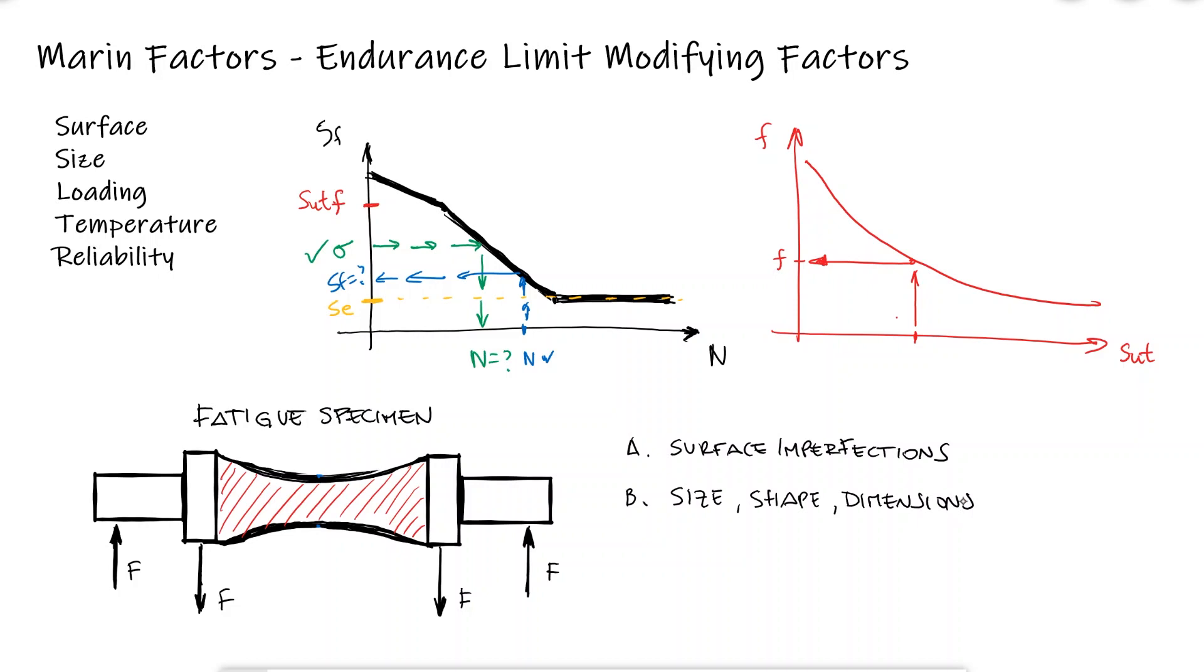Additionally, the alternating stress is a normal stress originating from the bending moment it is subjected to. If any of these conditions and parameters were to be changed, even the temperature of operation, the values of the endurance limit would inevitably change too.